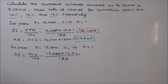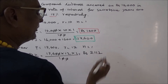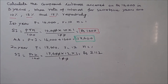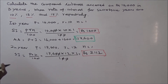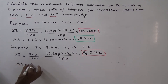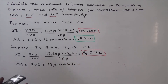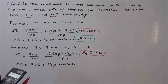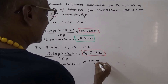So, 176 into 12 equals 2,112 rupees. This is the interest received at the end of the second year. The accrued amount at the end of second year is principal plus interest: 17,600 plus 2,112, that is equal to rupees 19,712.